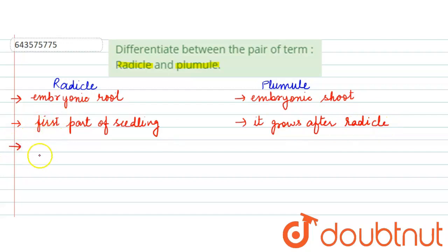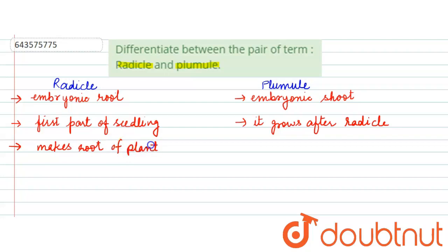Proceeding towards the third point of difference: the radicle makes the roots of the plant, whereas the plumule makes the shoot of the plant.